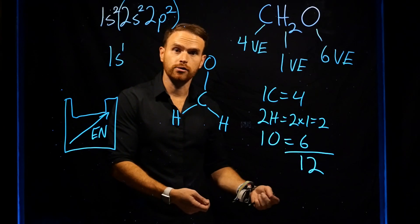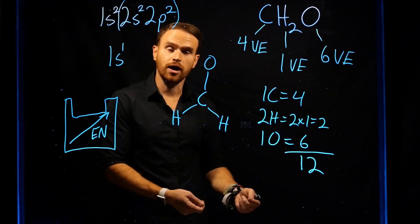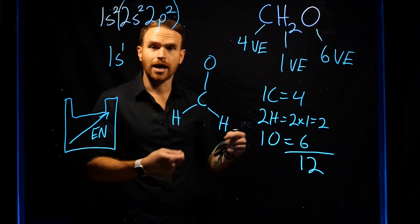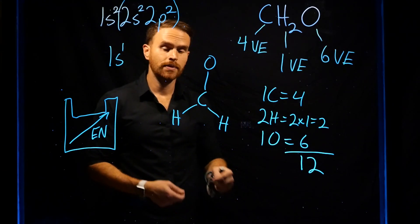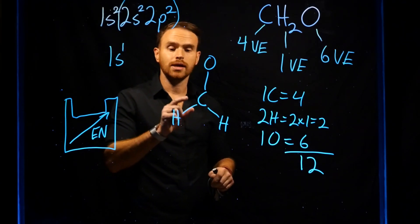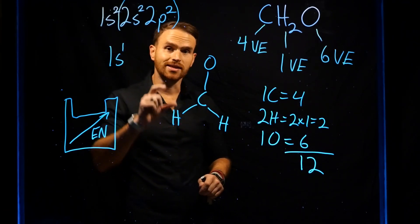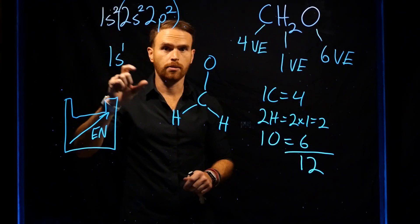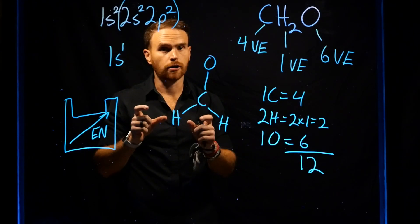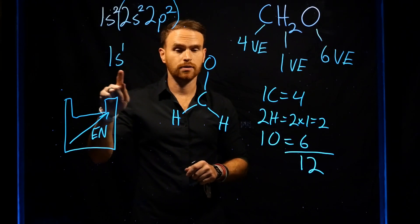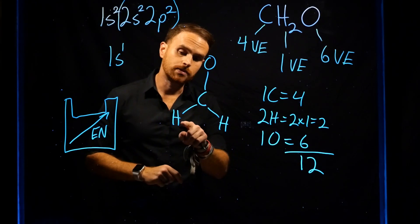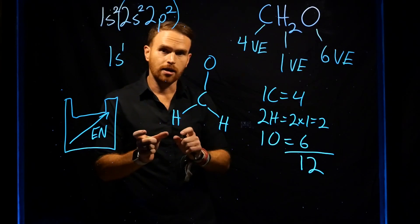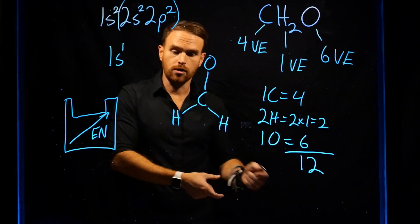The next step is to adorn the outer atoms with lone pairs until you satisfy the octet rule, or surround each atom with eight electrons. Keep in mind that because hydrogen is in the n=1 principal quantum number atomic orbital subshell, it only needs two electrons to fill, which means hydrogen is exempt from the octet rule.